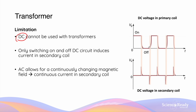When the voltage in the primary coil is turned on, it goes from zero to a non-zero value, giving us an increase in magnetic flux. Consequently, we'll have an induced EMF in the secondary coil. But again, when the voltage in the primary coil remains constant, there's no longer a change in flux, and therefore the EMF or voltage in the secondary coil becomes zero again.